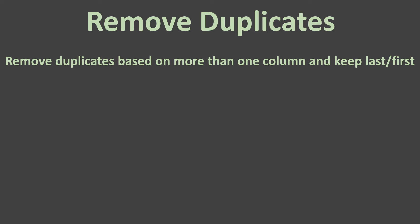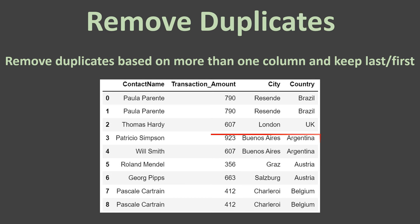The next scenario is removing duplicates based on more than one column and keeping the last or first record. Here we have duplicates based on city and country, and when removing duplicates, you need to decide which record to keep — Will Smith or Patricio Simpson. You might want to keep Will Smith and remove the other, or the other way around. Pandas provides the facility to specify which one to keep: either the first or the last.